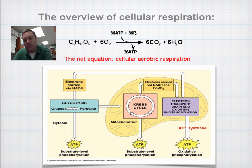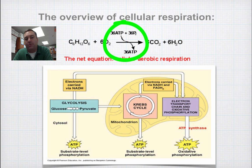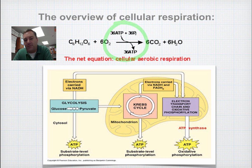You also want to notice that the whole purpose of cellular respiration is to produce ATP. When you have aerobic conditions — in other words, oxygen is available — you're going to make on average about 36 ATP per glucose molecule.